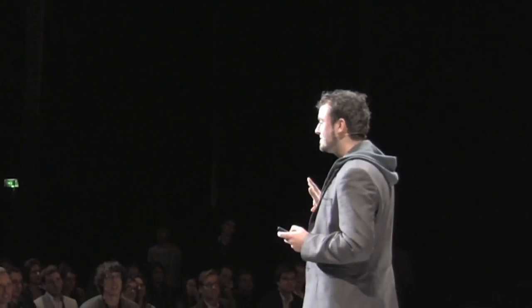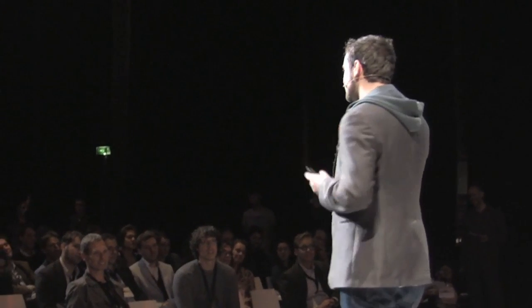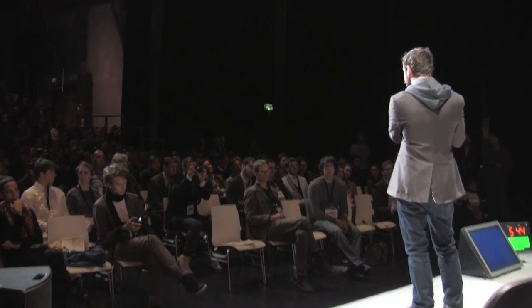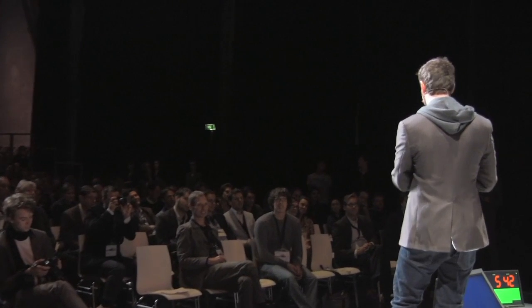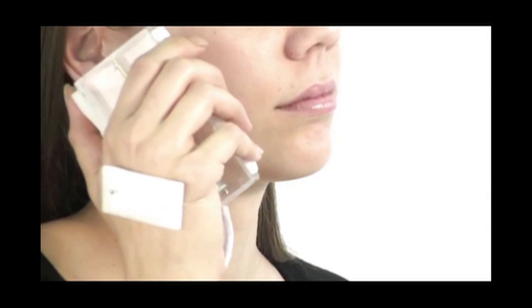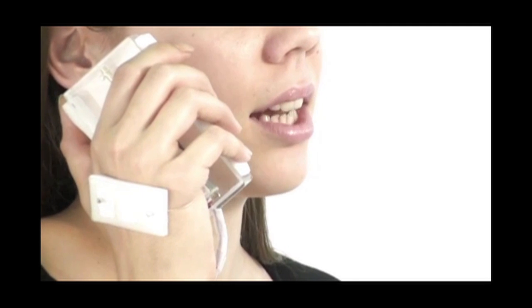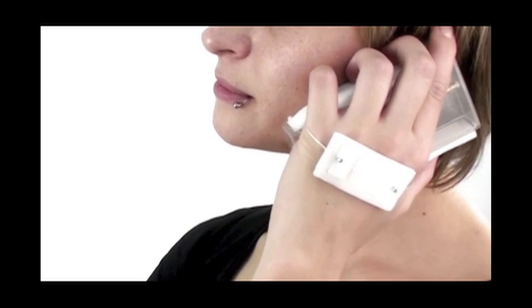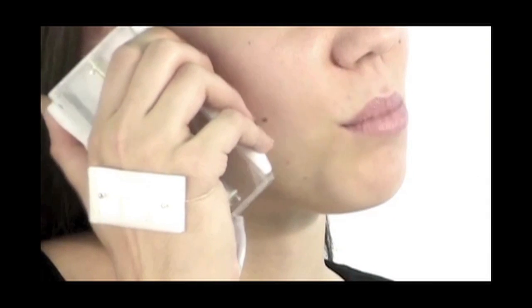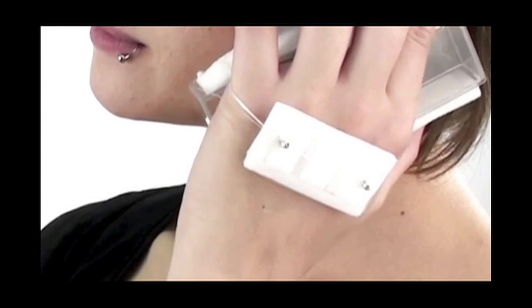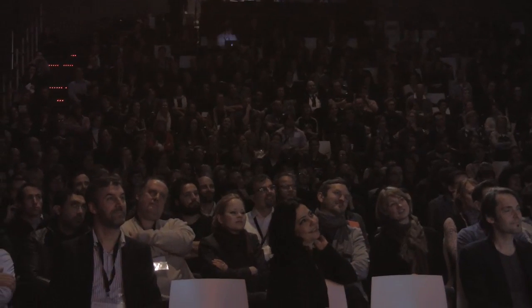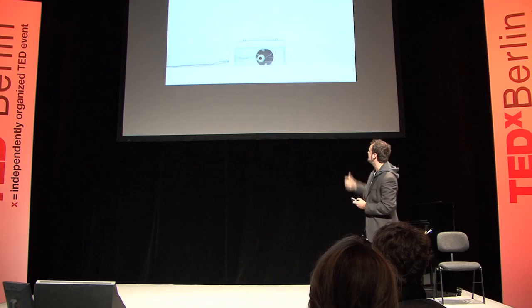Today I brought three prototypes that I would like to show you, that we built to explore that field. The first prototype is about the hand. Imagine a mobile phone that lets you feel the other person's hand holding your hand while speaking on the phone. Let me show you the mobile phone that communicates pressure. It just communicates that pressure right to the back of your hand. We use a motor inside and just pull that towards the hand.